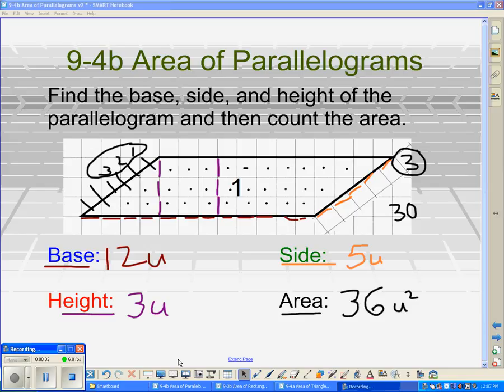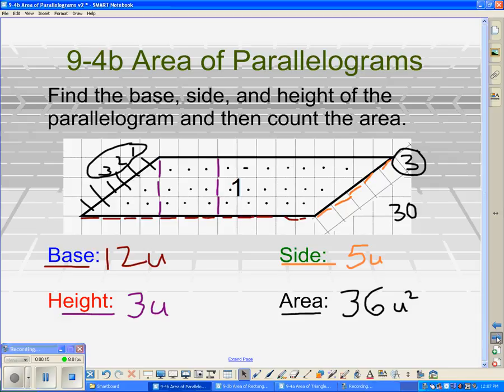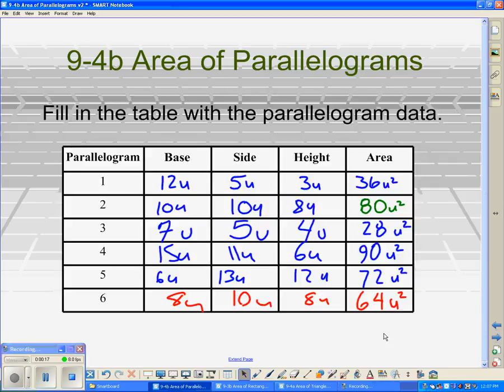All right, so we're looking at values now for the base, the side, and the height of the parallelogram, and we're looking at the areas that we counted to try and develop some kind of connection between the values. At this point, you should have completed a table that should look something like this.